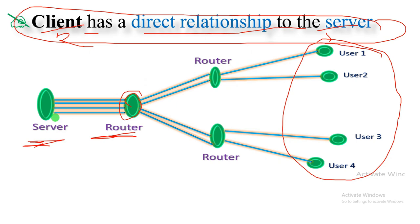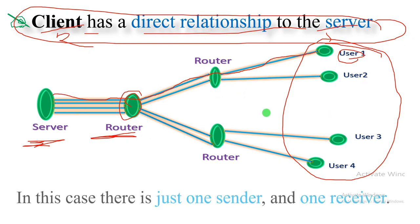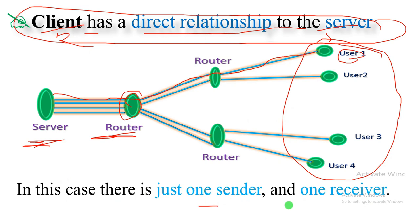So there is a server and there is a user. As you have seen, the client has a direct relationship to the server, and since they have their own interface, the user data is forwarded directly. There is a direct relationship between sender and receiver. In this case, there is just one sender and one receiver.